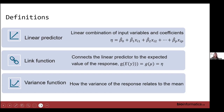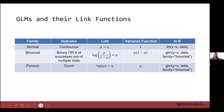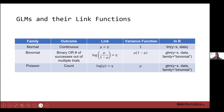Each GLM also assumes a variance function — that's how the variance is related to the mean. In the normal distribution, as with standard linear models, the link function is just the identity function, meaning mu equals the linear predictor: y = beta-0 plus beta-1 x1, and so on. It assumes a variance function of 1, meaning the variance does not depend on the mean — they're independent — which is why we look for constant variance of the model residuals.